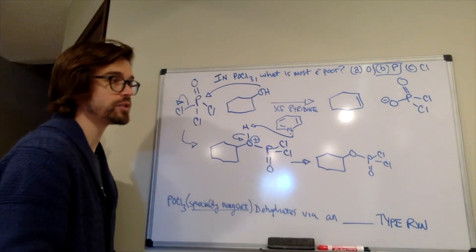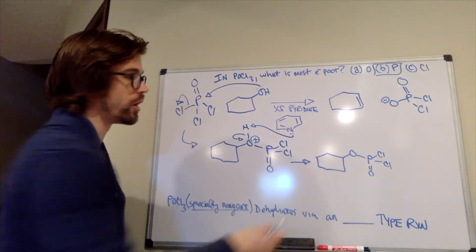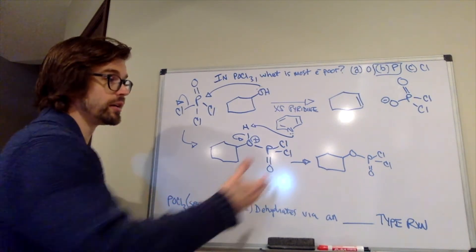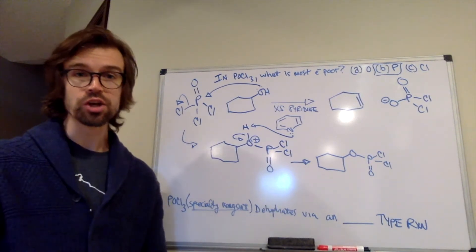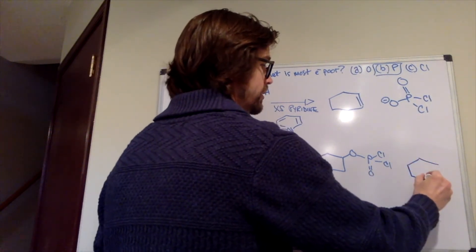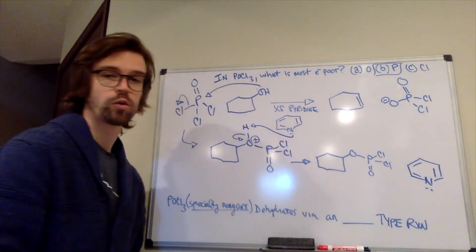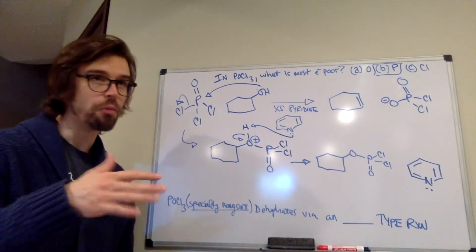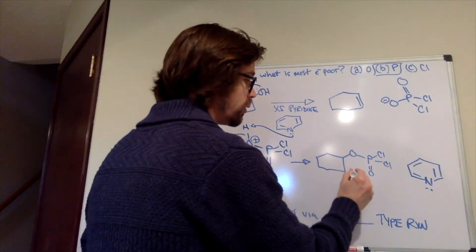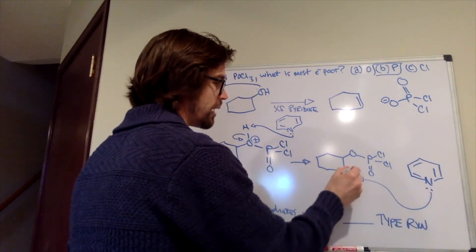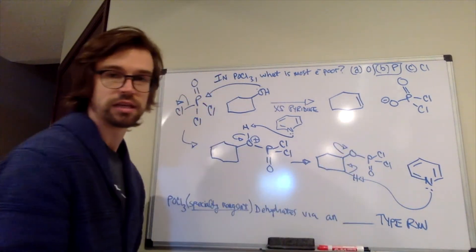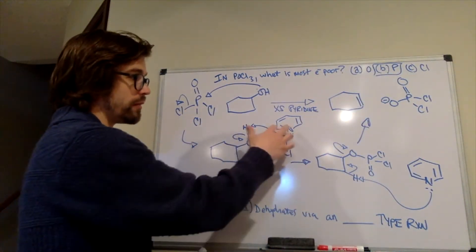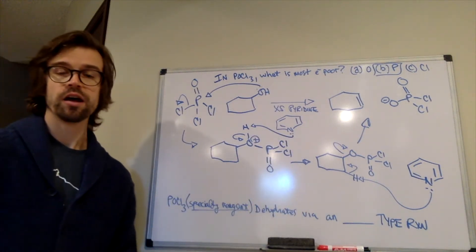We still have more pyridine around, and if we look at what products we have, we already have the leaving group — a good leaving group, a secondary leaving group. Pyridine is a moderately good base/nucleophile, there's lots of it in excess, and that allows us to have an E2 reaction. A secondary leaving group with a moderate-to-strong base would be a bimolecular reaction: pyridine adds, grabs the hydrogen, the E2 mechanism occurs, forming our alkene and our leaving group. We have two equivalents of pyridine that are protonated upon this reaction.